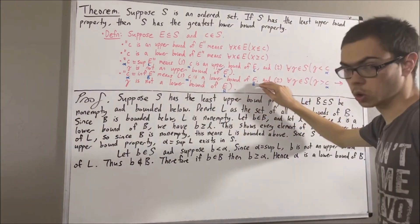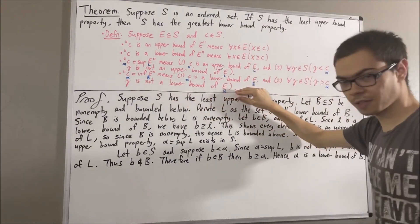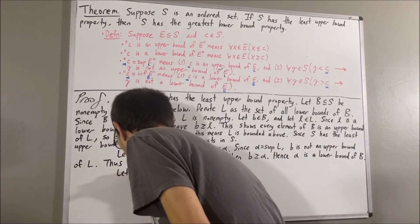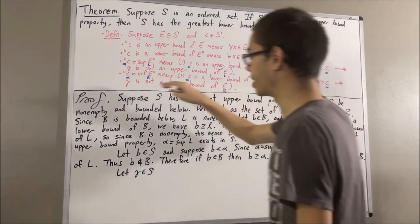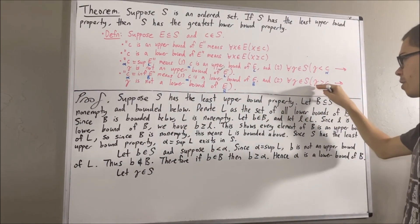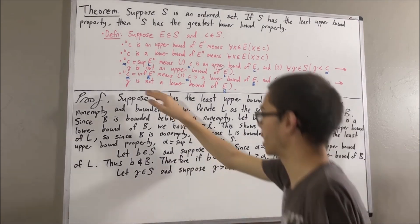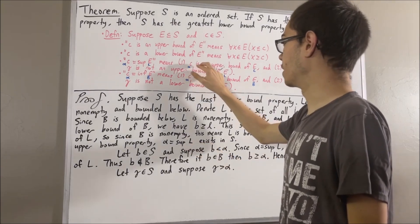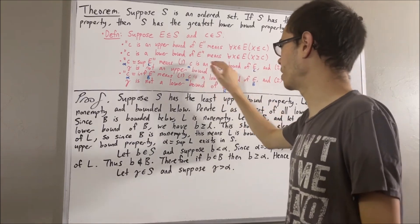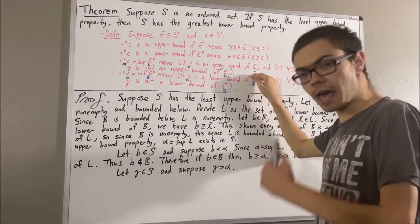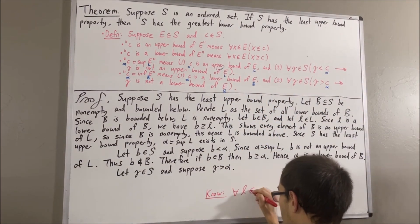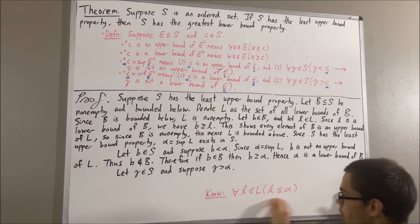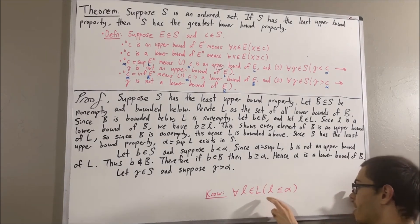So we've proven that the first thing holds. Now we want to prove that the second thing holds. And since we're trying to prove a statement about all elements of S, let's give ourselves an arbitrary element of S. We'll call it gamma. And we want to prove: if gamma is greater than alpha, then gamma is not a lower bound of B. So let's suppose that gamma is greater than alpha. From here, we want to prove that gamma is not a lower bound of B. Well, since alpha is the supremum of L, we know in particular that alpha is an upper bound of L. What does it mean for alpha to be an upper bound of L? It means for all L in L, L is less than or equal to alpha. This is equivalent to saying: for all L in S, if L is an element of L, then L is less than or equal to alpha.